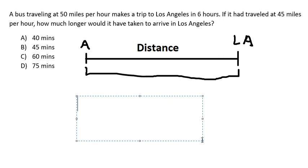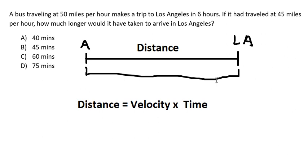The formula of distance is velocity multiplied by time. The velocity we have is 50 miles per hour, and the time is 6 hours. So we get 300 miles.